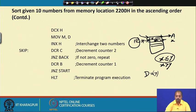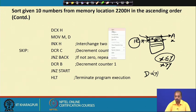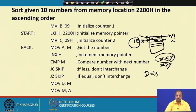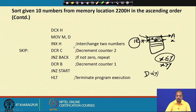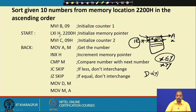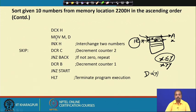We decrement C because one iteration of the inner loop is complete, then jump on not zero back to continue. If C becomes 0, one complete pass is done. We then decrement the B register and if B is not 0, we go back to start the next iteration of the outer loop. This process is repeated 9 times, so the entire array gets sorted. This is how we sort 10 numbers in ascending order.